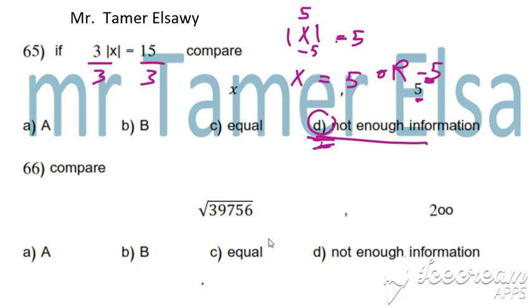It is tricky. Absolute of x have two solutions: 5 or negative 5. Another one.